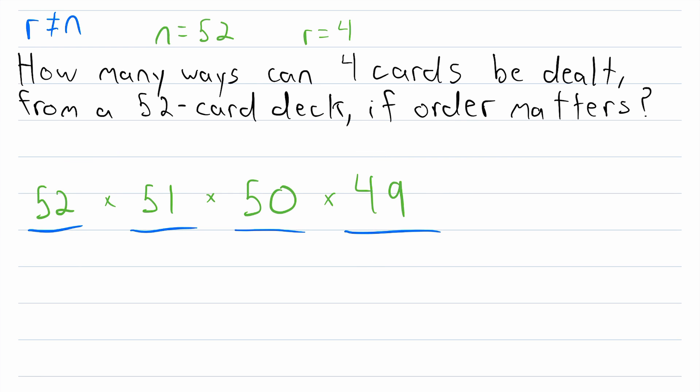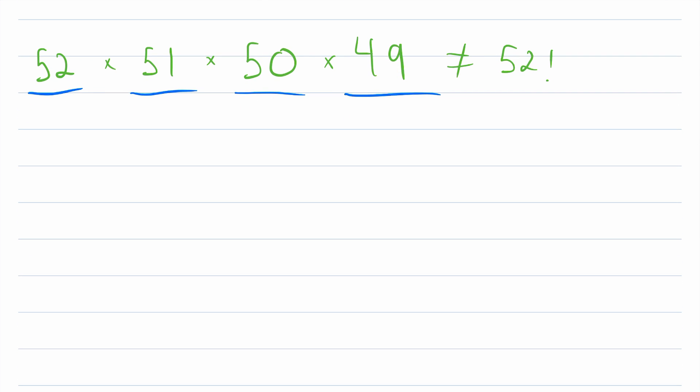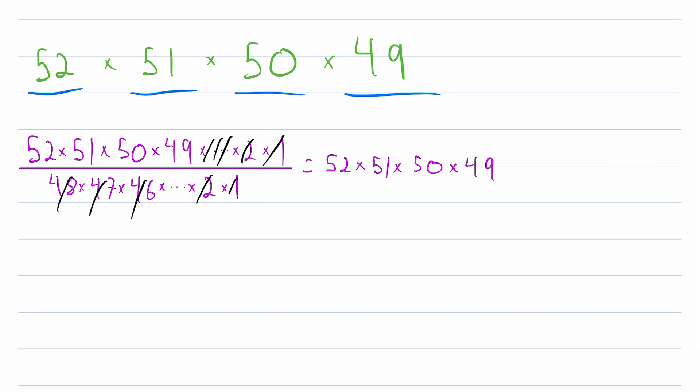Now this, of course, is not equal to 52 factorial, but it does look kind of similar to 52 factorial. If we had 52 factorial, what could we do to change this 52 factorial to make it equal to this? Well, they are equal all the way up to that times 49. So if we wanted to make this equal to this, then we would have to divide out everything else. So here's what I mean by that. We would have to divide by 48 times 47 times 46, and so on, of course, all the way down to 2 times 1. If we divide this by this, then what we'll be left with is just the answer we got in green above, 52 times 51 times 50 times 49. And again, that's because everything else is going to cancel out with what we divided by.